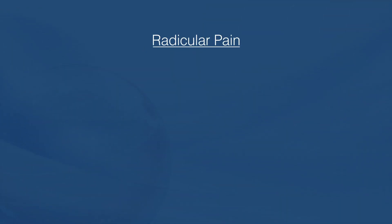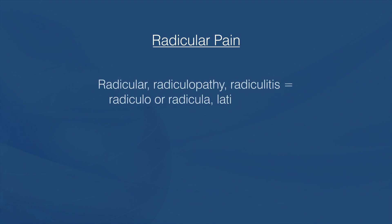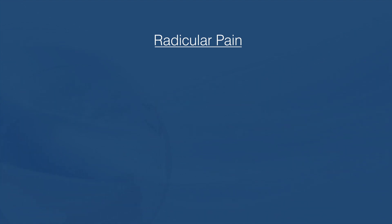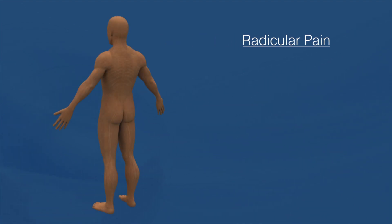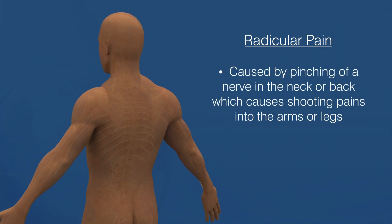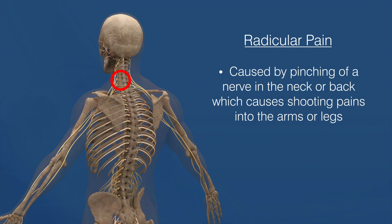Radicular pain — what is it? Radicular, or radiculopathy, or radiculitis, are terms that come from the Latin word radiculo or radicula, which means the root. Radicular pain is the pain caused by pinching of a nerve in your neck or back, which then causes a shooting pain into your arms or legs.